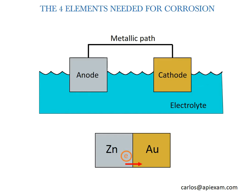For corrosion to take place, there are four elements that are needed: an anode, a cathode, a metallic path, and an electrolyte — those you can see here.